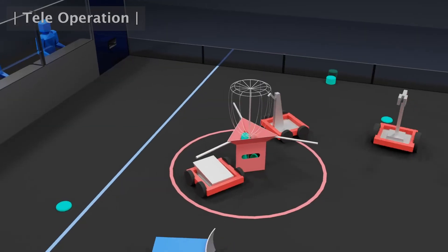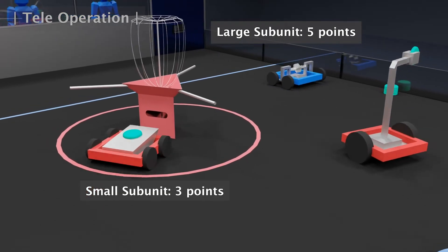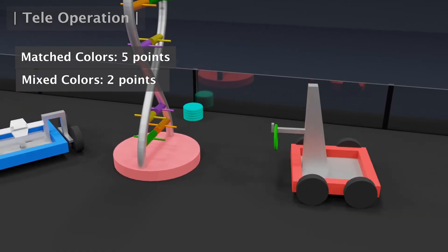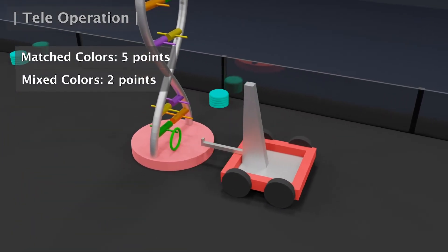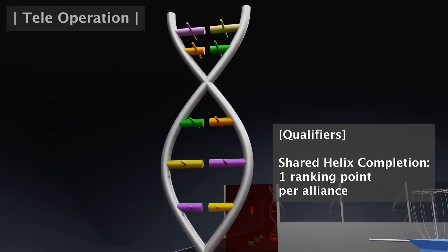During the next two minutes and 15 seconds of the game, teams remotely control their nanobots and continue to score aminos into ribosomes, hang nucleotides on the racks, and complete DNA helices during qualifying rounds. Completing the shared DNA helix will reward both alliances one ranking point.